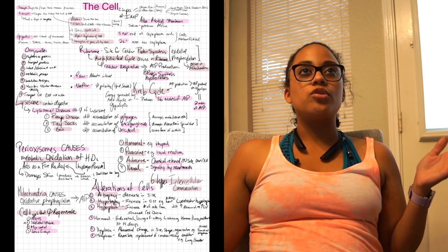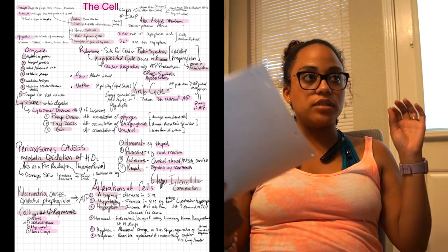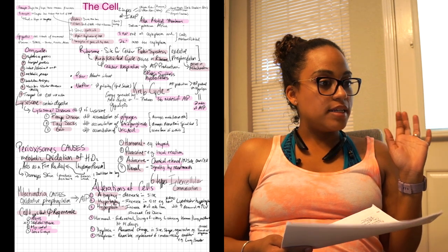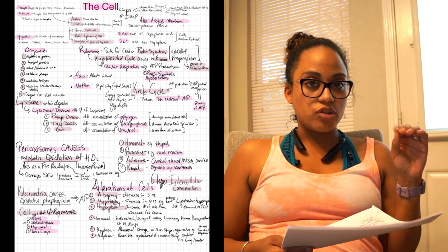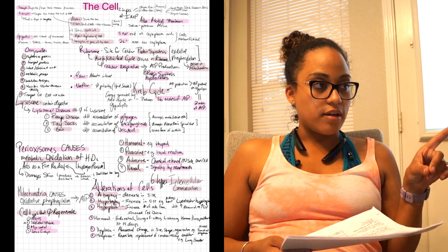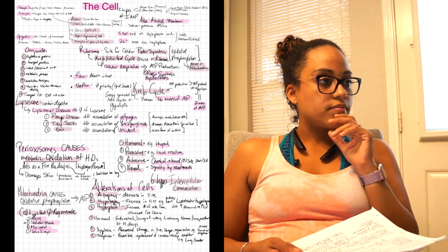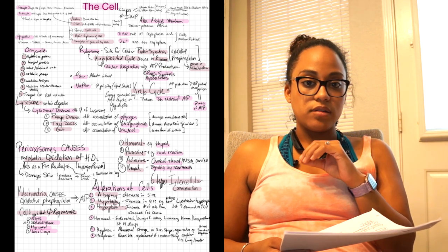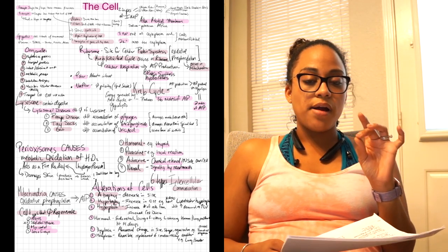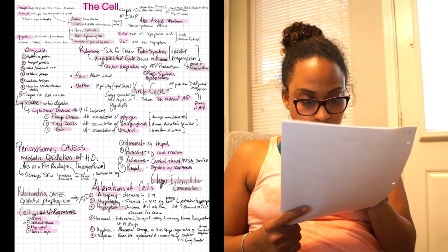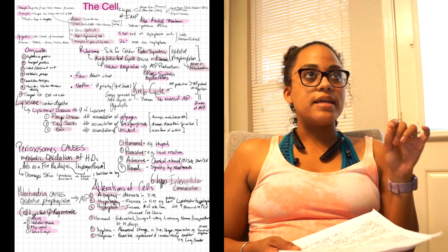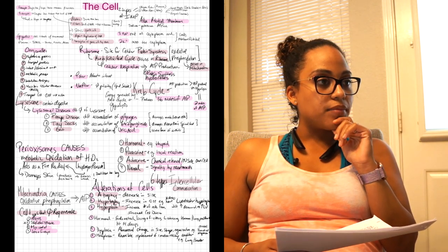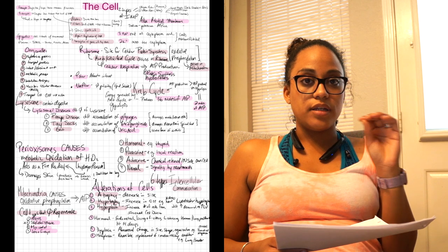All right, lysosomes, which is an organelle in the cell. It's important because I have three different diseases that were mentioned in my lectures. The accumulation of glycosides leads to the development of Pompe disease, the accumulation of GM2 gangliosides leads to Tay-Sachs disease (we just did a case study on it), and the accumulation of uric acid leads to gout.